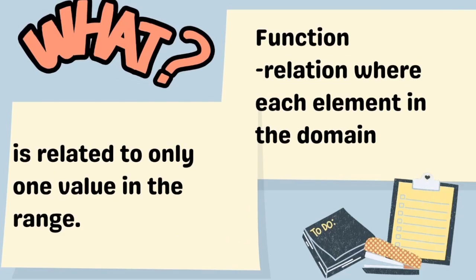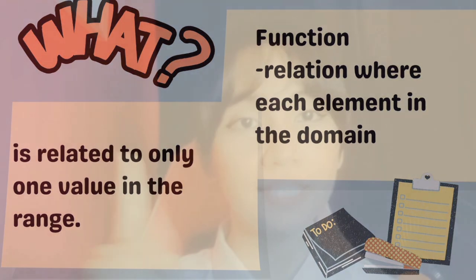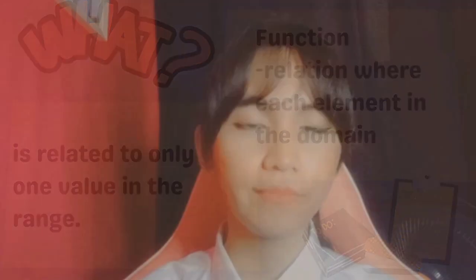A function, on the other hand, is the relation where each element in the domain or input is related only to one value in the range or output. So, if our domain is related to two or more values in the range or output, then that is not a function.